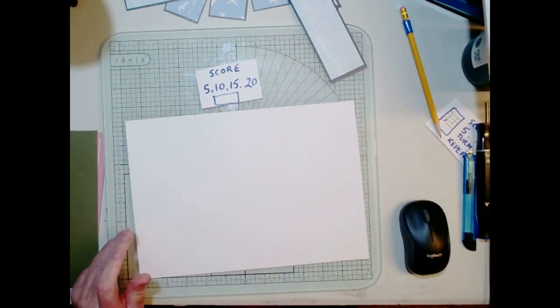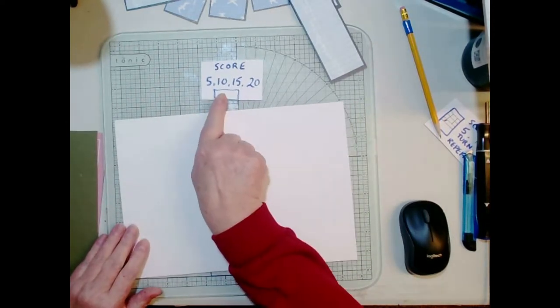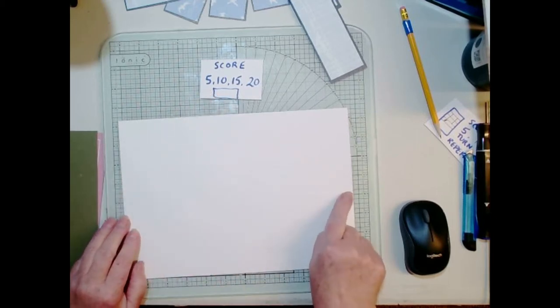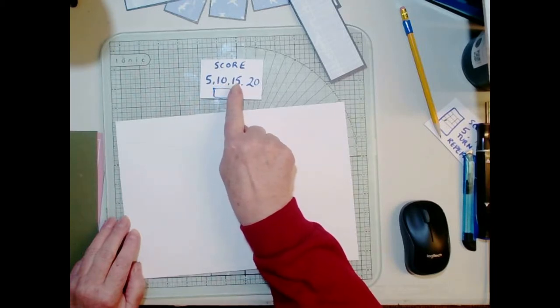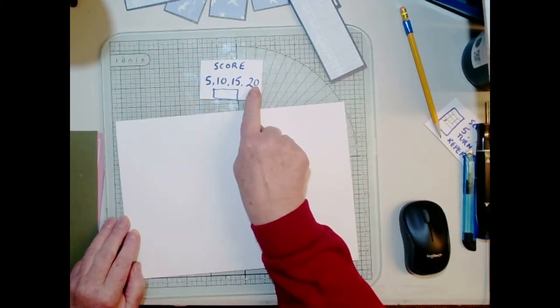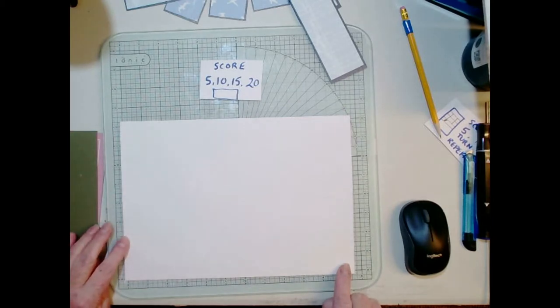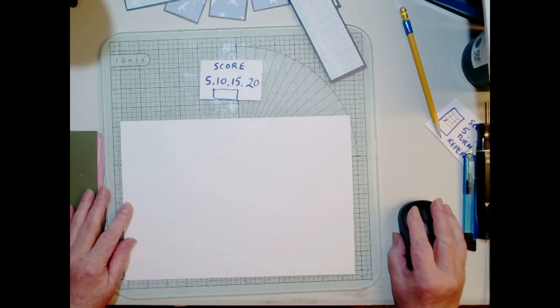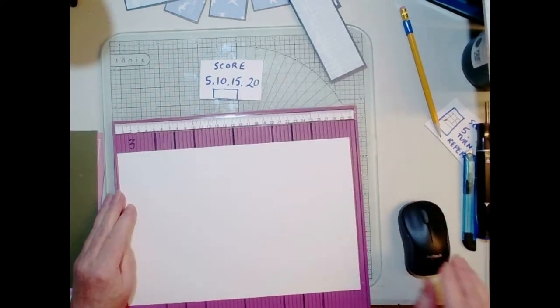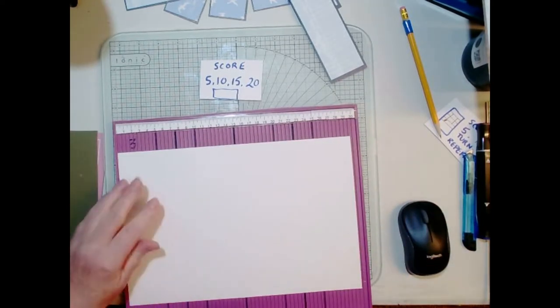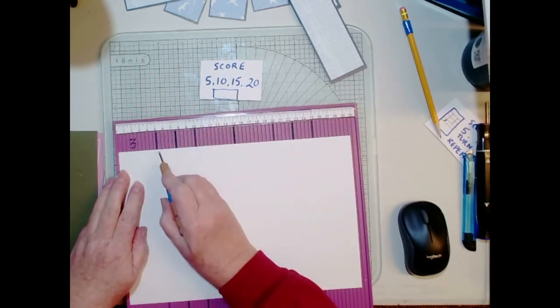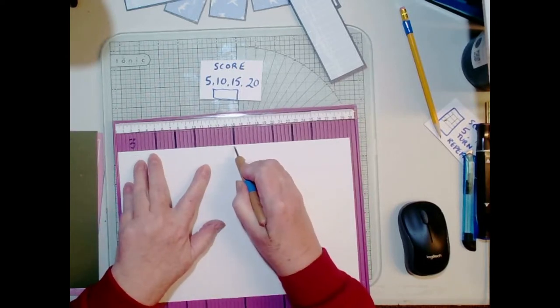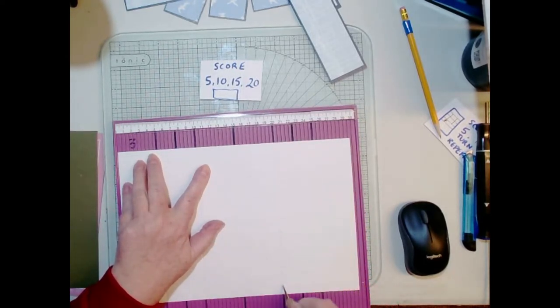So the first thing that we're going to do is to score a paper with it landscape 5, 10, 15, 20. Now this is normal A4 but I have taken one centimeter off the bottom. So now we're ready to score and we're going to score 5, 10, 15, 20.